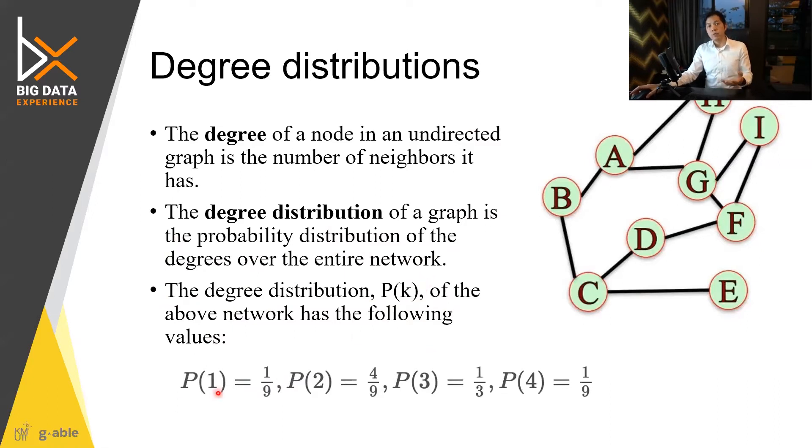Like the chance that you'll find the one connection. You have one connection, one, two, three, four, five, six, seven. Actually you have one, you have this is number of node equal nine. And then there is one node that has one degree. That's why you have one over nine here. P(1) is one over nine.